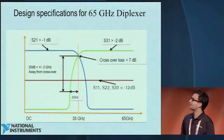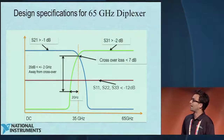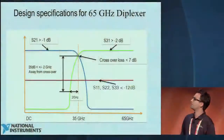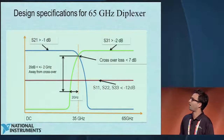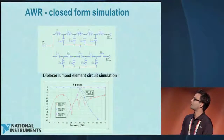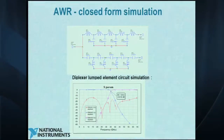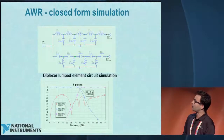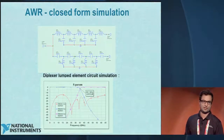Let me give a quick overview of the 65 gigahertz diplexer design. Our specification is a 35 gigahertz crossover frequency, 20 dB rejection 22 gigahertz away from center frequency, only 2 dB insertion loss all the way to 65 gigahertz, and return loss better than 12 dB. I start again with AWR, do a Chebyshev low-pass/high-pass design, optimize using lumped elements, and achieve better than 15 dB return loss.